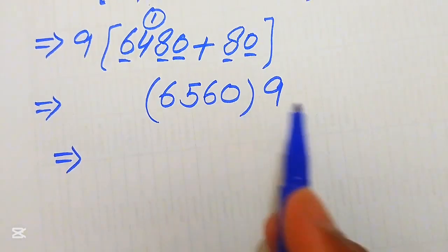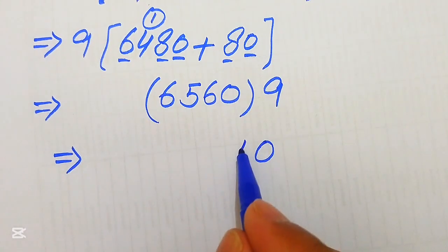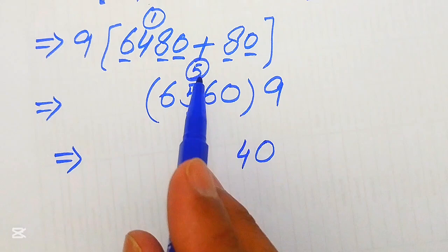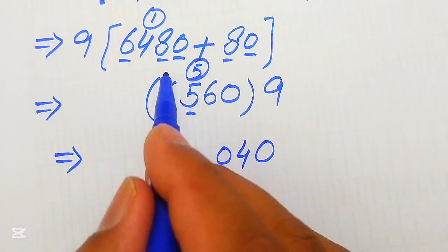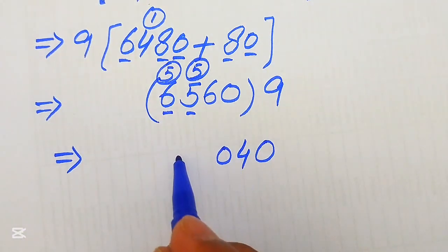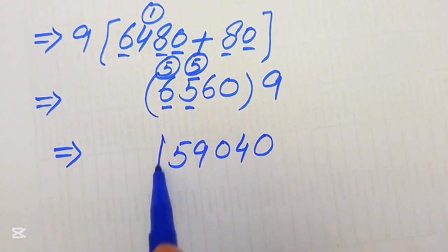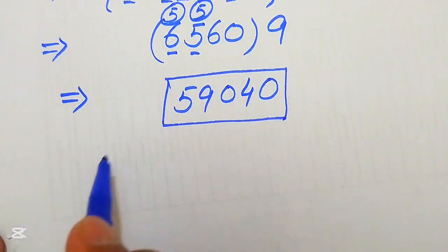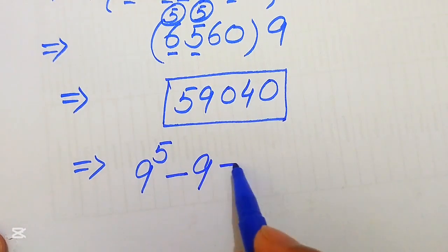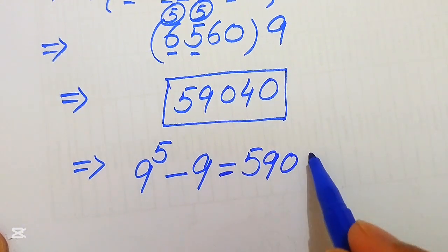Multiplying 6560 by 9: 9 times 0 equals 0; 9 times 6 gives 54, write 4 carry 5; 9 times 5 is 45, plus 5 equals 50, write 0 carry 5; 9 times 6 is 54, plus 5 equals 59. So our final simplified answer is: 9 to the power of 5 minus 9 equals 59,040.